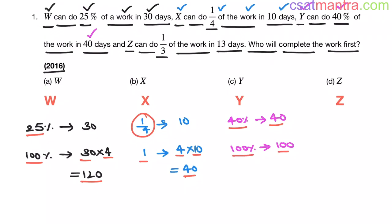Z can do 1/3rd of the work is completed in 13 days. So 1 work will be completed in 3 into 13, that is equal to 39 days my friends. See, 1/3rd in 13 days, so I multiplied with 3 on both sides. Here it became 1, so here 3 into 13, that is 39.